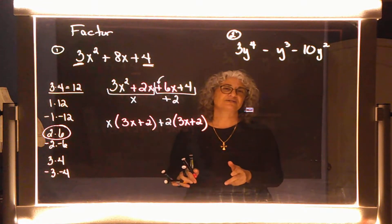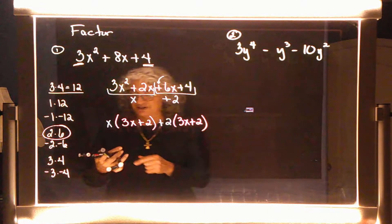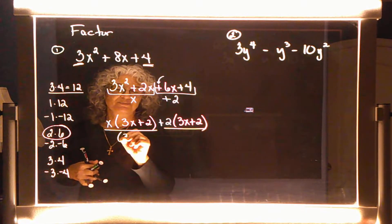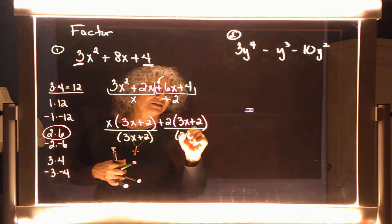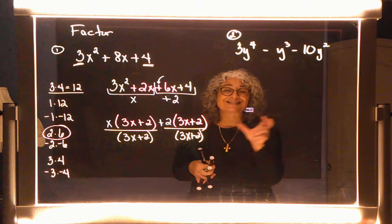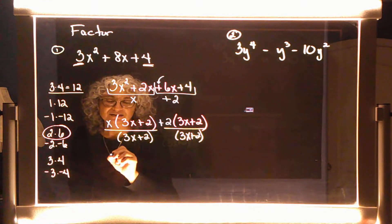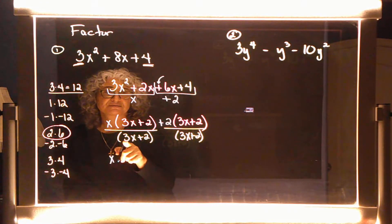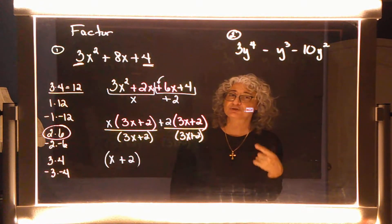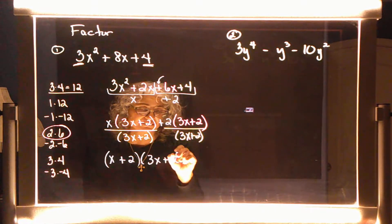So we went from three terms to four terms to this breaking apart. And last but not least, the next line is the final answer. These two expressions both have that parenthesis in common — that's what was distributed to. So x out of the first, positive two out of the second, and this x plus two was distributed to the parenthesis of 3x plus 2.